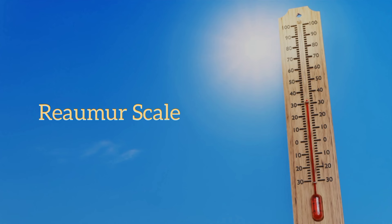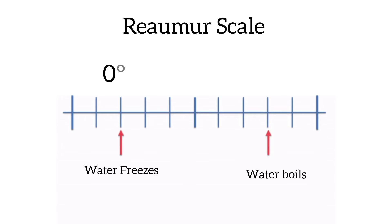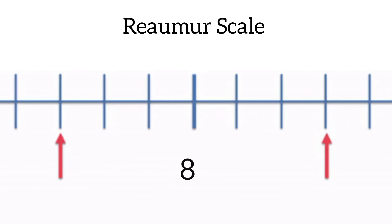The next scale is the Réaumur scale. On this scale, the freezing point of water is set at 0 degree Réaumur while the boiling point is set at 80 degree Réaumur. There is a difference of 80 parts between boiling and the freezing point.